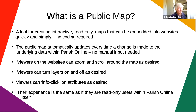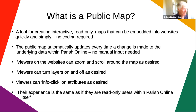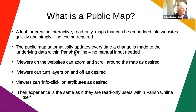A public map is simply a tool that enables you to put what you've got in Parish Online up on a website where users can interact with it. They can zoom in, scroll, click on attributes, and turn layers on and off, just the same as if they were actually in Parish Online. One of the most appealing parts is that every time you make a change within a particular layer, it automatically updates on the public map — you don't need to do anything.